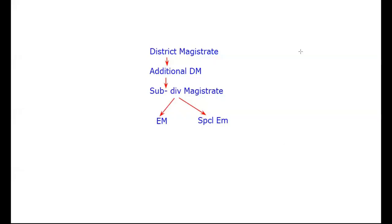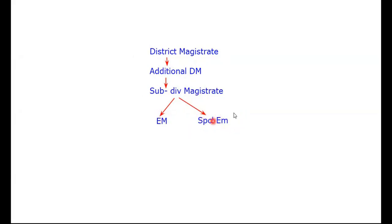In this video we'll discuss subordination of executive magistrates under Section 23 of CrPC. We have the District Magistrate at the top of the hierarchy, followed by the Additional District Magistrate — both are almost parallel and equal in position — then the Subdivisional Magistrate, followed by Executive Magistrate and Special Executive Magistrate.